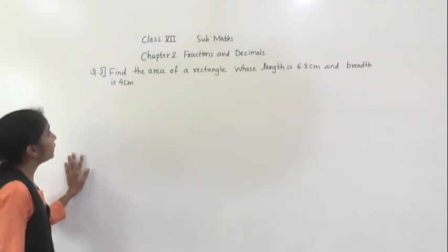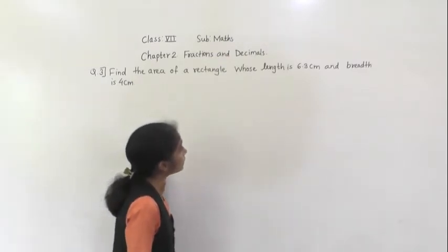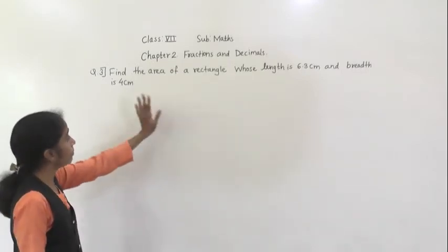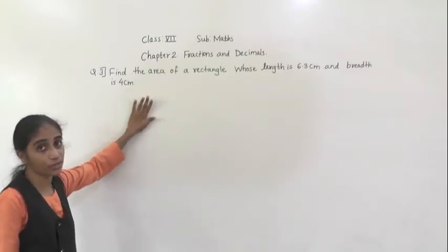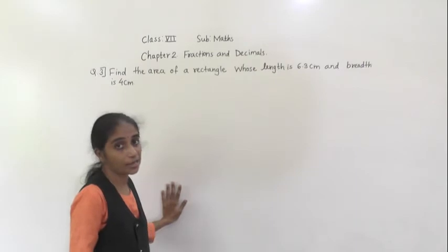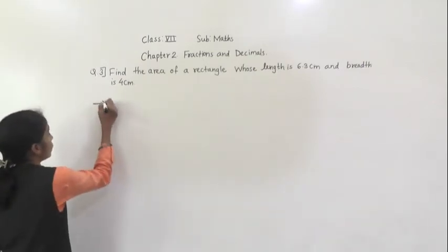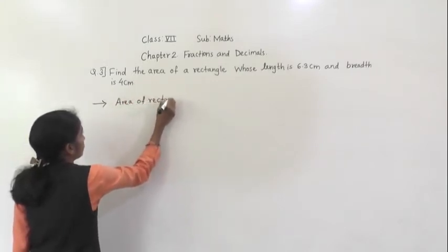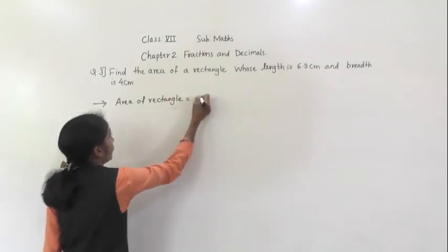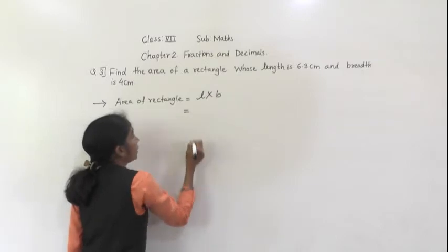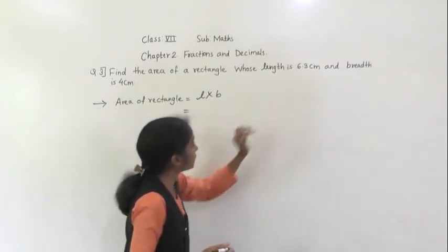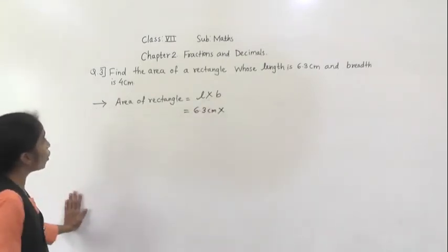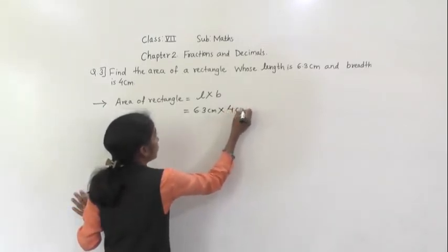Let's solve question number 3. Find the area of a rectangle whose length is 6.3 cm and breadth is 4 cm. Length is given, breadth is given. We have to find the area of rectangle. What is the formula for area of rectangle? Length into breadth. So area of rectangle is equal to length multiplied by breadth.